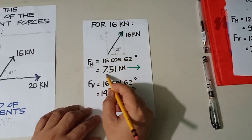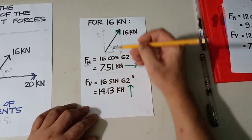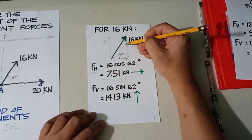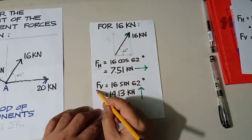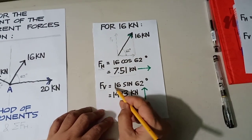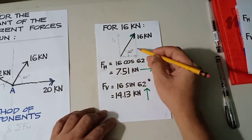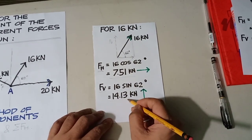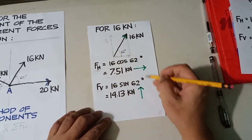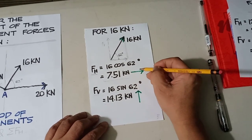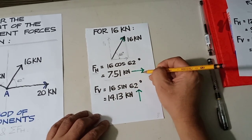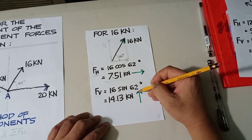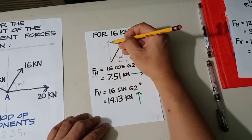The horizontal component gives an answer of 7.51. The vertical component, equivalent to 16 sine of 62 degrees, gives an answer of 14.13. The horizontal component is directed to the right and the vertical component is directed upward.